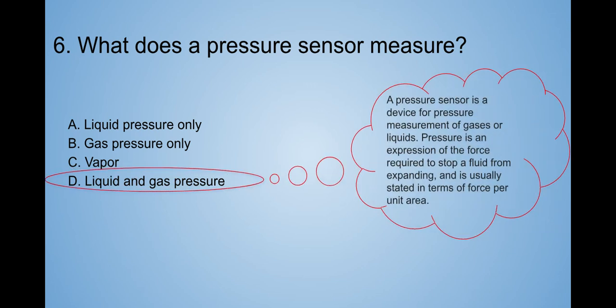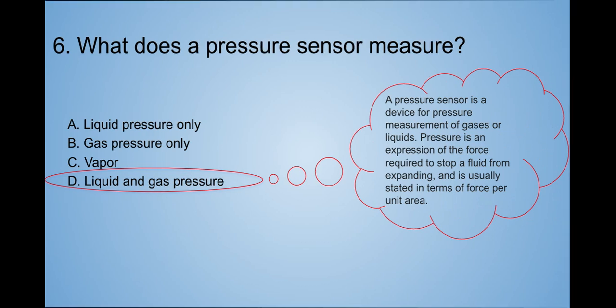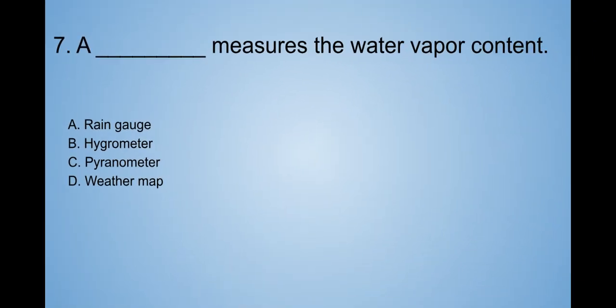The answer is D. Liquid and gas pressure. A pressure sensor is a device for pressure measurement. Ah, that rhymes. Of gases or liquids. Pressure is an expression of the force required to stop a fluid from expanding and is usually stated in terms of force per unit area. Okay, that makes sense.